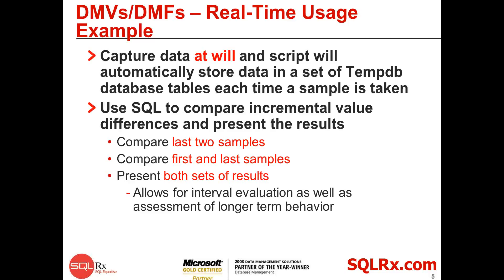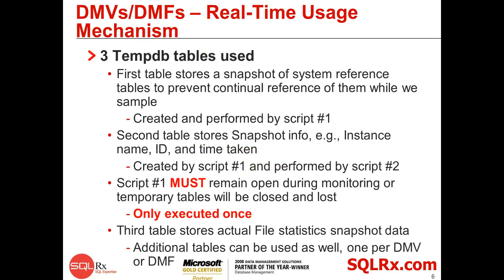Three temp tables are used. The first one stores a snapshot of the system reference tables so that when we create a sample we don't have to keep looking up things in the system tables all the time. The second one stores information about the snapshot itself. That connection has to stay open when you're doing it, otherwise you'll throw away the temp tables. The third one actually does the recording of the information, storing it, presenting it, and doing the computations — the difference operators and things like that. You can also use other tables to look at indices, OS waits, latching, and all kinds of different things.